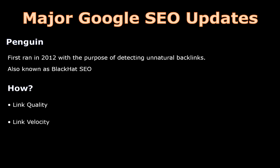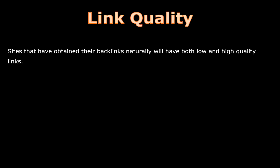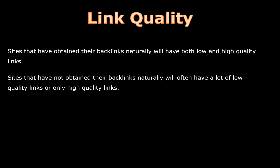So how does Penguin detect unnatural backlinks? It looks at the link quality, the link velocity, and the link diversity. Link quality: sites that have obtained their backlinks naturally will have both low and high quality links. On the other hand, sites that have not obtained their backlinks naturally will often have a lot of low quality links or only high quality links.